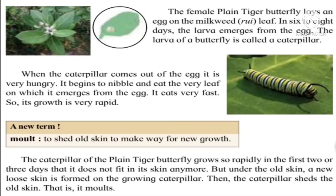As soon as the caterpillar comes out of the egg it is very, very hungry and starts eating the leaf on which it was. It nibbles and eats the leaf completely, eating fast and growing also fast. Nibbles means taking small bites as it eats. You can see a fat caterpillar eating and growing very fast at this stage.